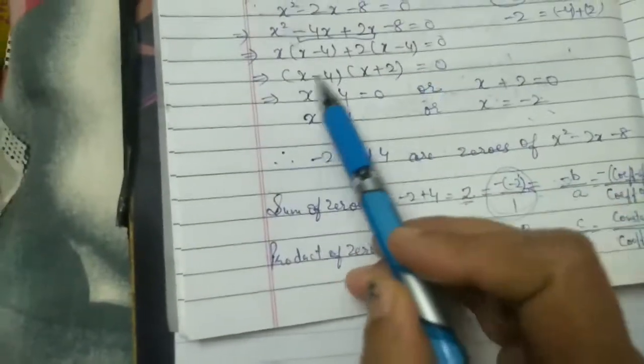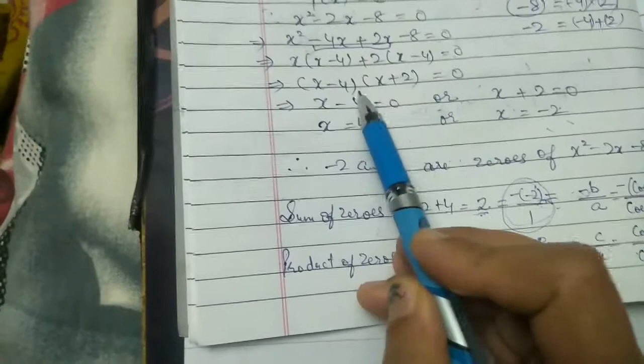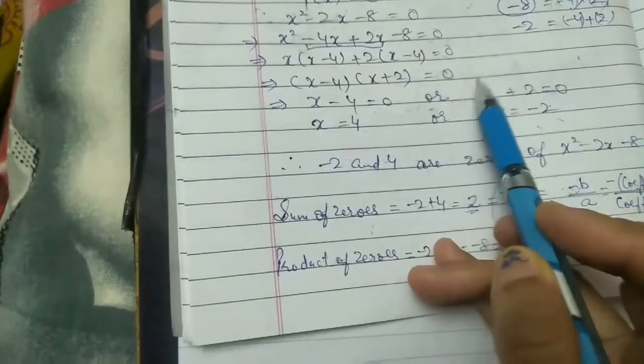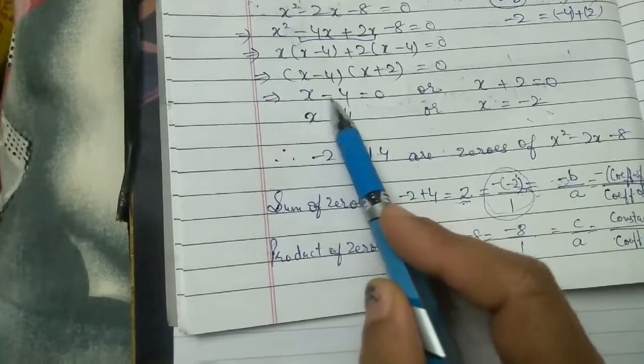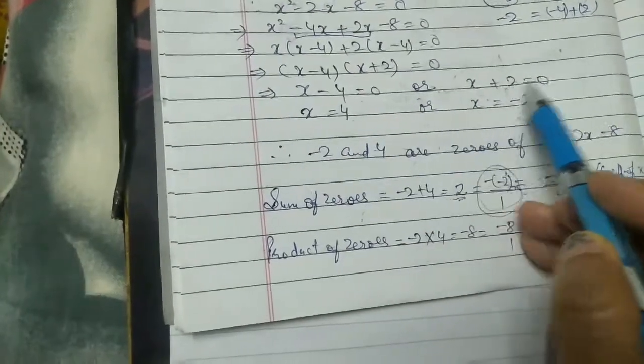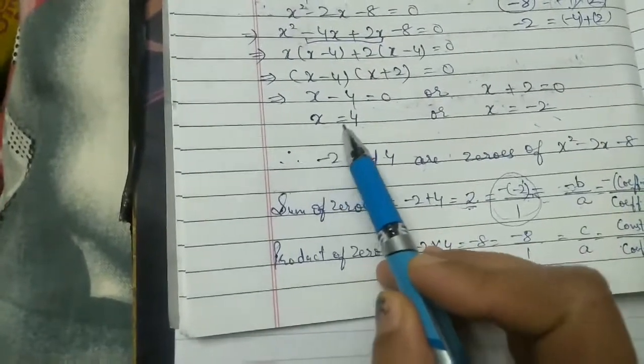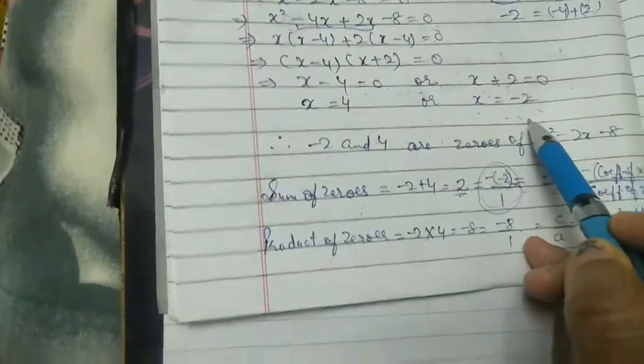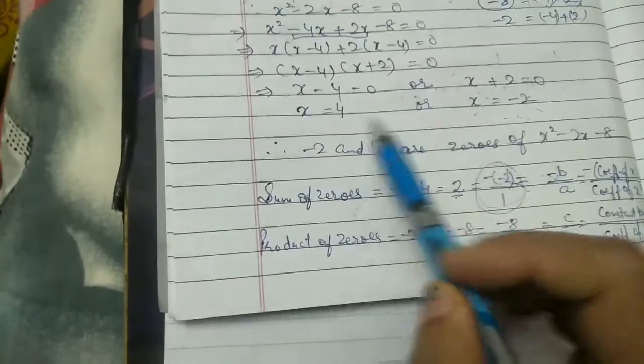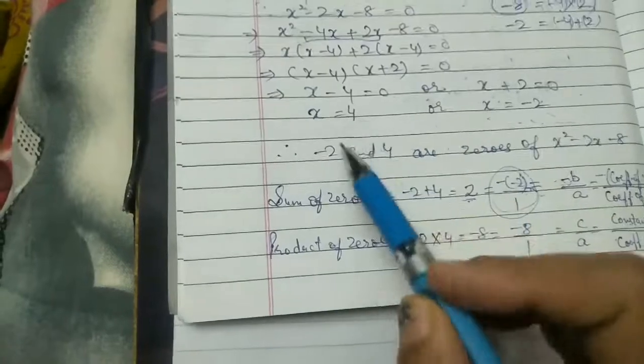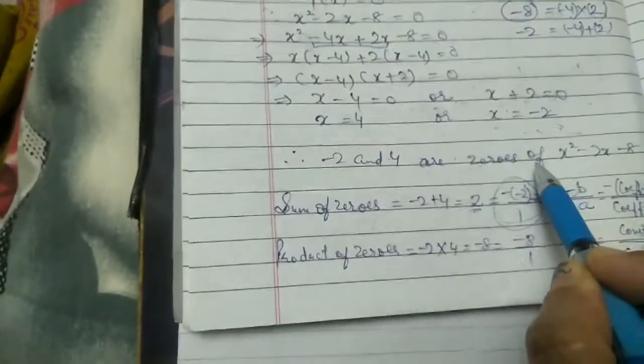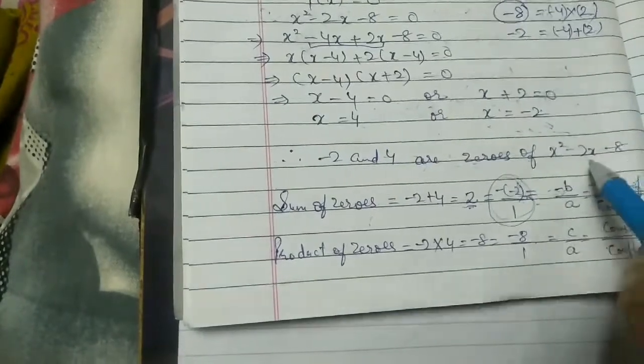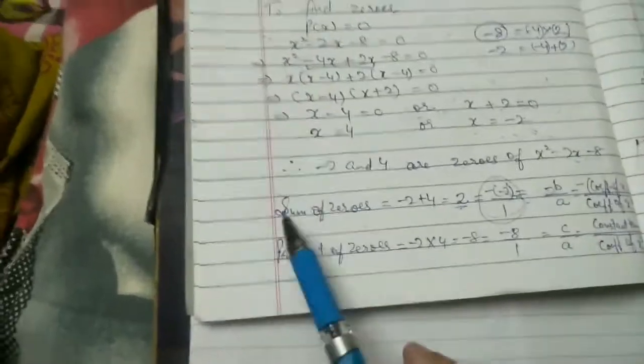From the factors (x - 4)(x + 2) = 0, we can say either x - 4 = 0 or x + 2 = 0. This gives us x = 4 or x = -2. Therefore, -2 and 4 are zeros of the given polynomial.